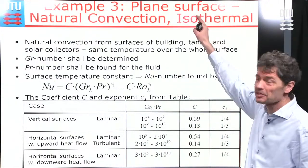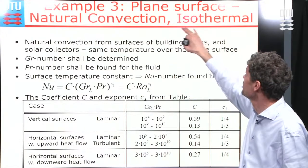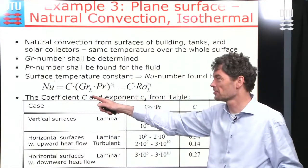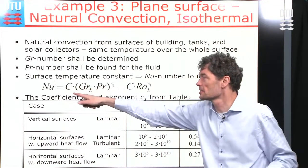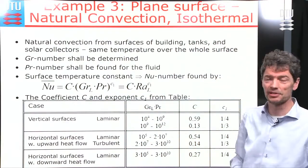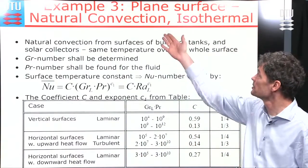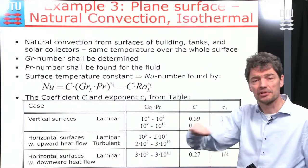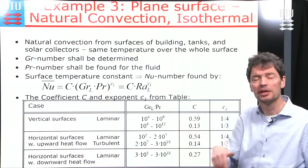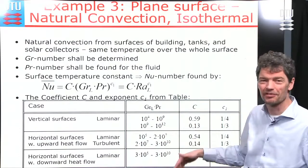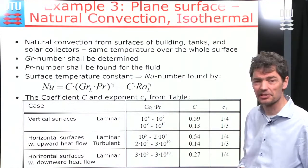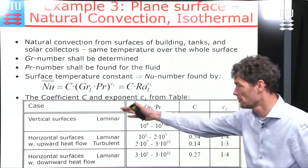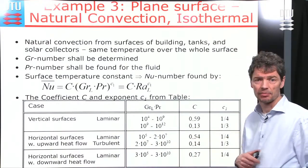Example three is a flat surface with natural convection under isothermal conditions. The Nusselt number equals a constant multiplied by the Rayleigh number raised to a power C1. For natural convection, it matters whether the surface is vertical or horizontal, and if horizontal, whether heat flow is upward or downward — these give different coefficient values in a table from literature, with a range of validity for the Rayleigh number.